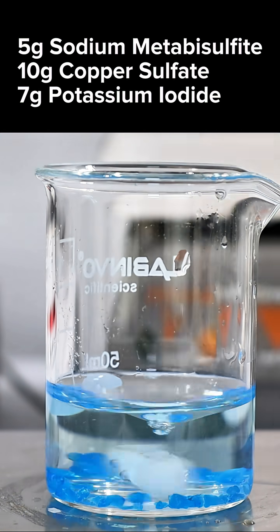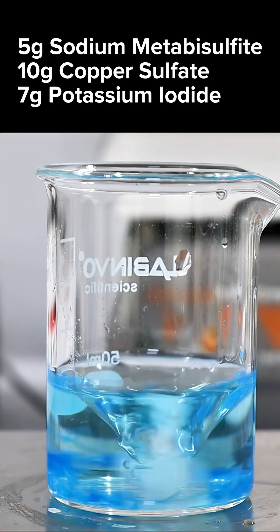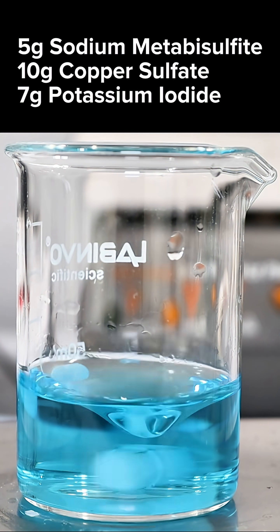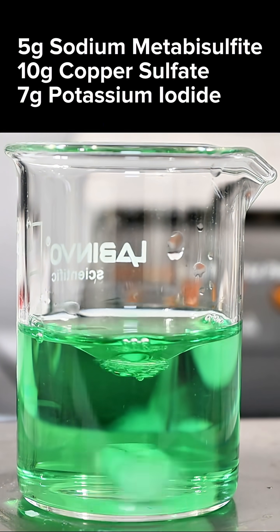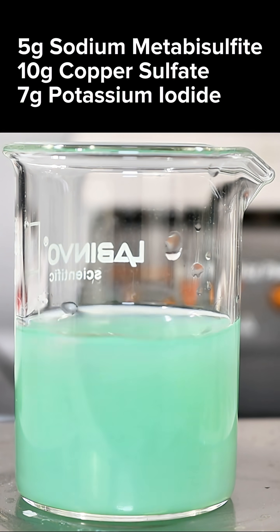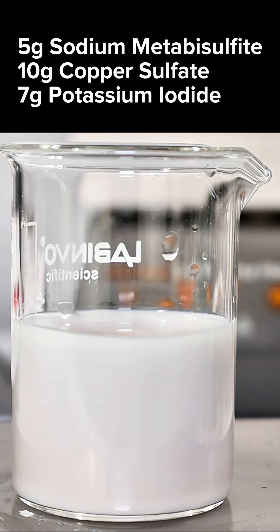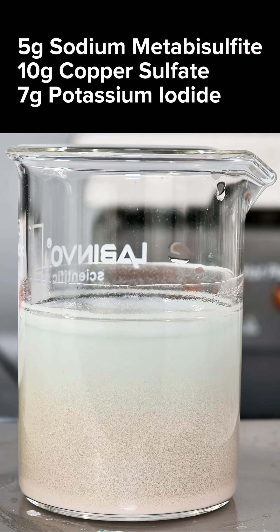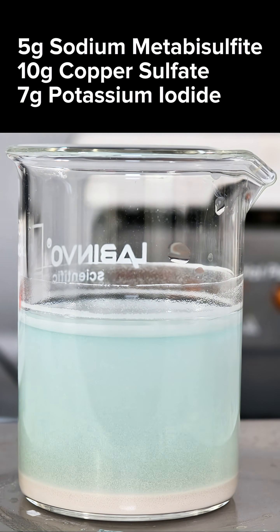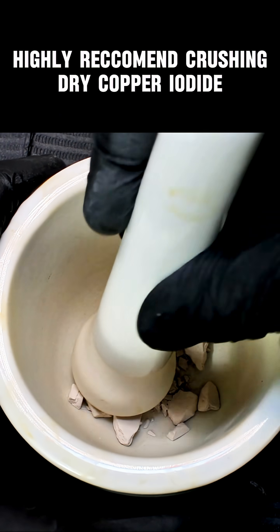To do this, dissolve a little bit of copper sulfate in water and then add sodium metabisulfite. This will turn green as the copper ions are reduced, and at this point add some potassium iodide. Copper iodide is insoluble in water, so filter it off, dry it out, and crush it into a powder.